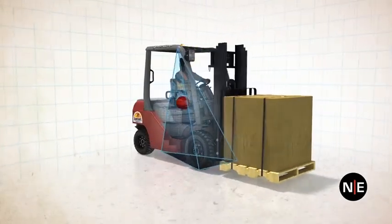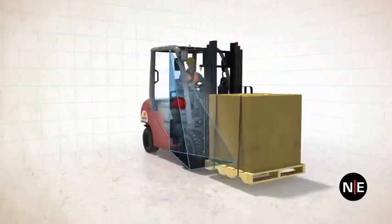When the forks are kept low, the stability pyramid is short and squat, making it relatively stable.